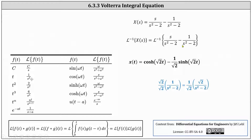And then we have minus the inverse Laplace transform of one divided by the quantity s squared minus two. To find this, we use the formula involving hyperbolic sine, where the inverse Laplace transform of omega divided by the quantity s squared minus omega squared is equal to hyperbolic sine of omega t. In our case omega squared equals two, but we don't have square root two in the numerator, so we multiply by square root two over square root two, writing it as one over square root two times square root two divided by s squared minus two. Therefore the inverse Laplace transform is one over square root two times hyperbolic sine of square root two t. So our solution is x of t equals hyperbolic cosine of square root two t minus one over square root two times hyperbolic sine of square root two t.